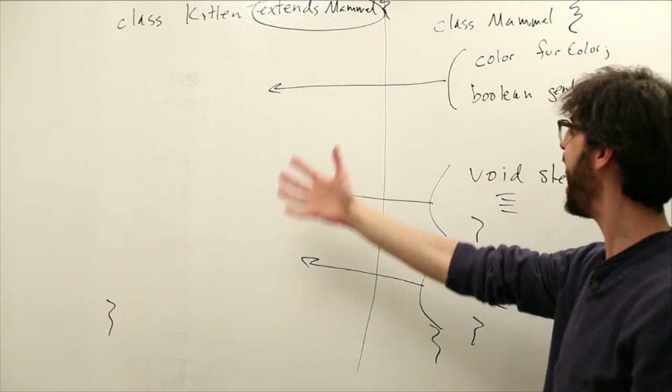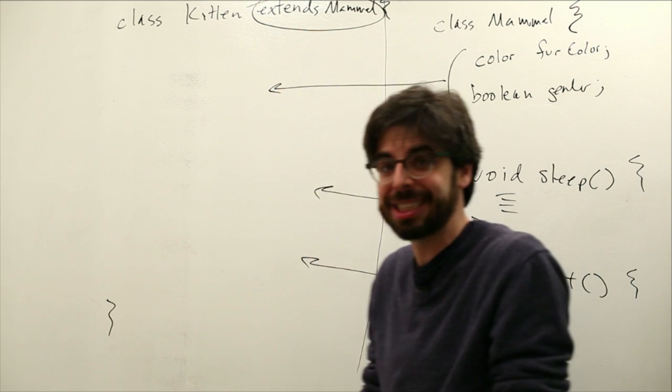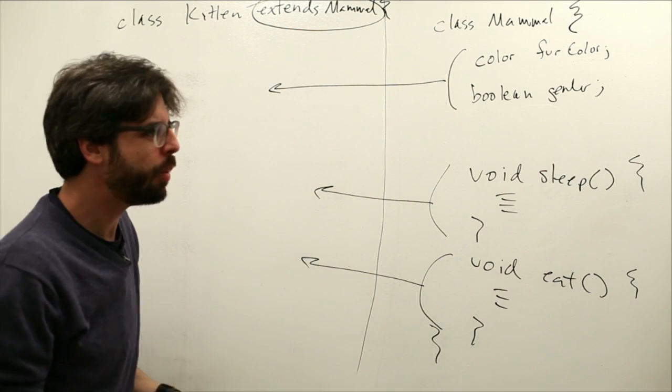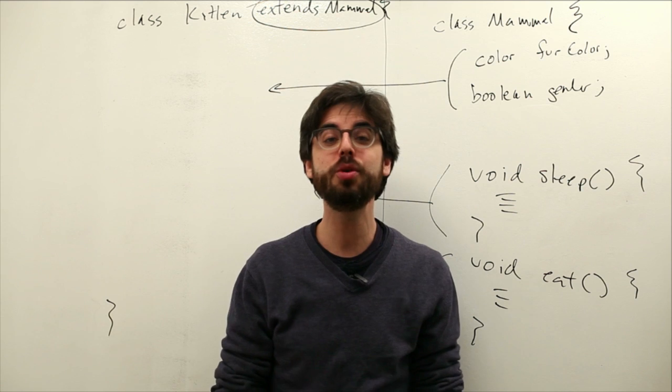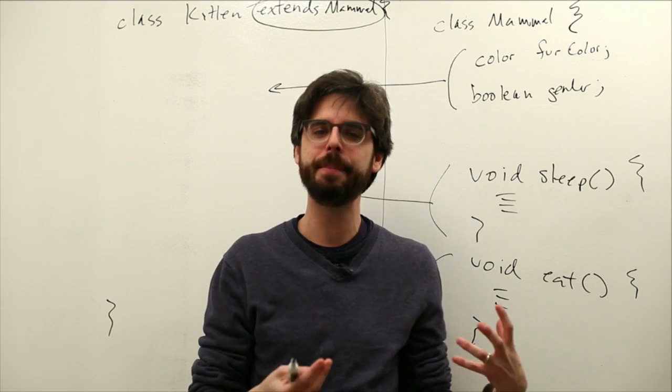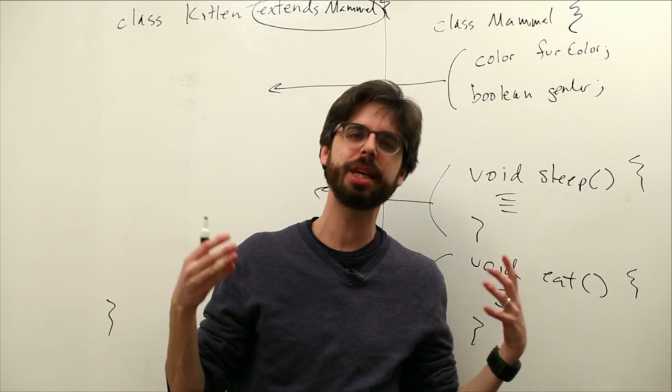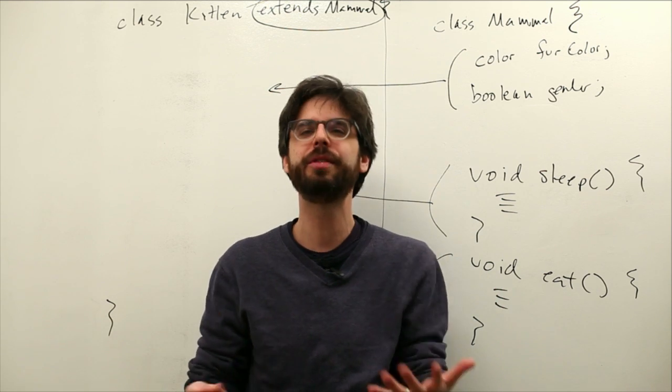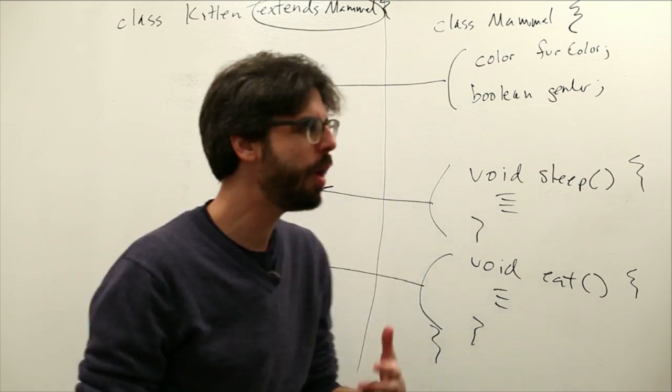They are assumed now. It's as if we wrote the identical sleep function. It's as if we wrote the identical eat function over here. So these are all the things that happen with inheritance automatically. Boom, we're done. We have basically a kitten class is done.